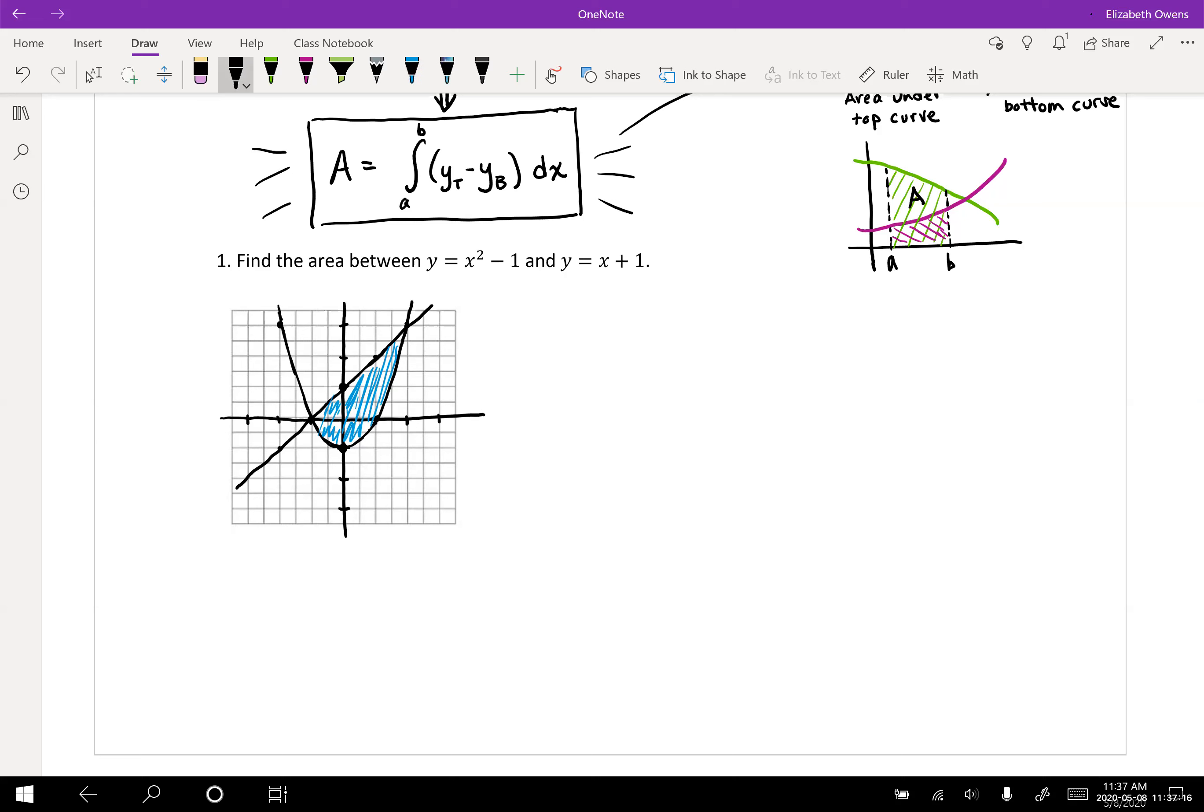You can pick your interval here right off the graph if you like. If your graph is done accurately enough, you can see that we're going to be going from a to b where a is negative one and then b over here is two. But you know, sometimes we don't always make the best graphs in the world and those points aren't always super clear.